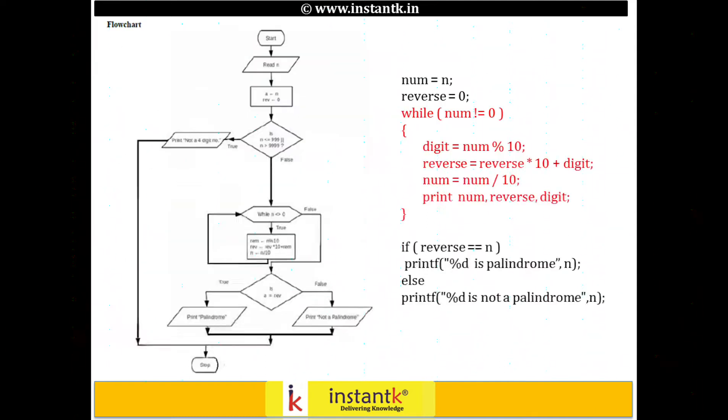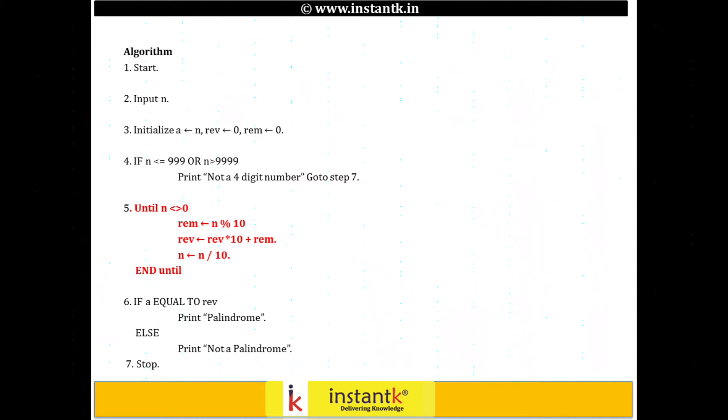Let me go through the algorithm. The algorithm is very simple. You read the number n and initialize n with a. For our convenience, we are assuming it is a 4-digit number. So we are not taking anything below or above it. If n is less than 3-digit or n is greater than 4-digit, we print not a 4-digit number and go to the end.